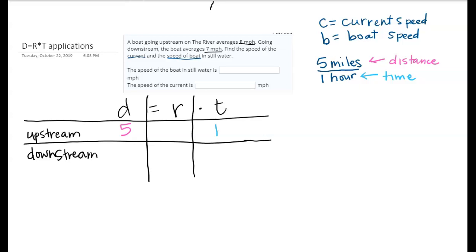Similarly we have something going on with the downstream where the boat averages seven miles per hour. So that would be seven miles, the distance, in one hour.